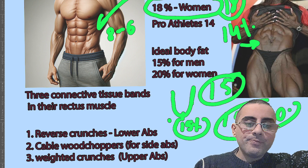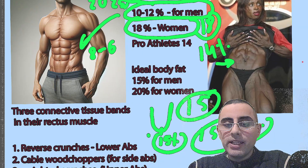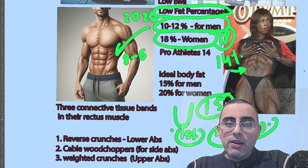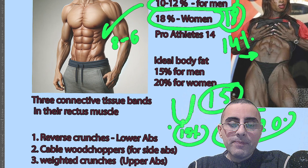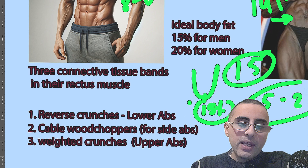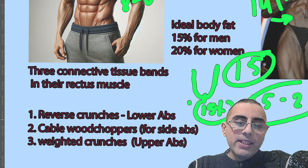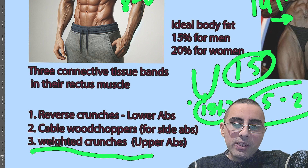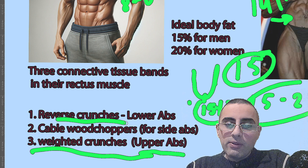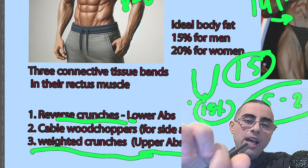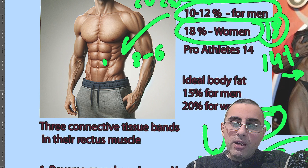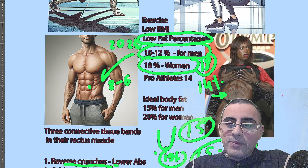Now let's talk about how we can help our body develop a six pack. Reverse crunches are considered very effective. Weighted crunches are important for upper abs, and reverse crunches are important for increasing the size of the lower abs. That's how we can exercise the abdominal muscles.